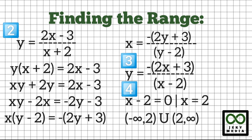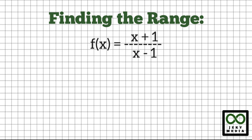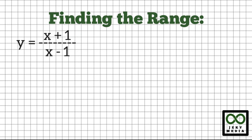Let's try again. Let's find the range of the rational function f(x) equals (x plus 1) over (x minus 1). Step 1: Let's replace f(x) by y. This will become y equals (x plus 1) over (x minus 1). Step 2: Solve for x in terms of y.